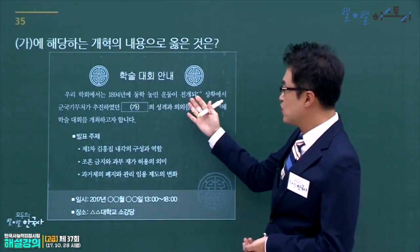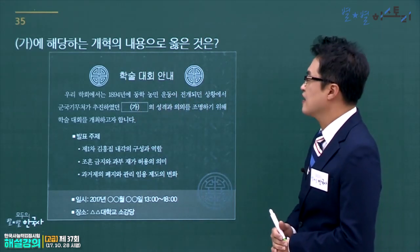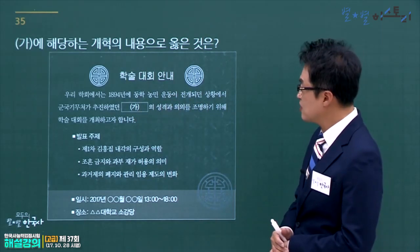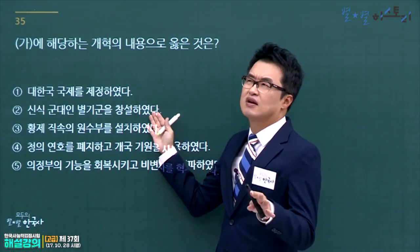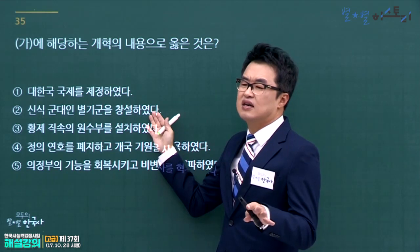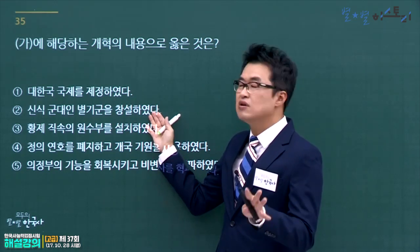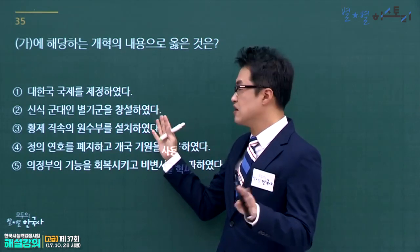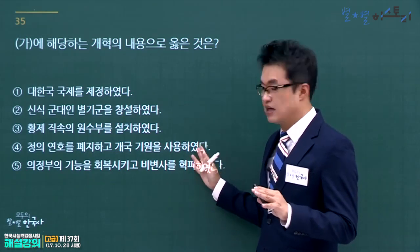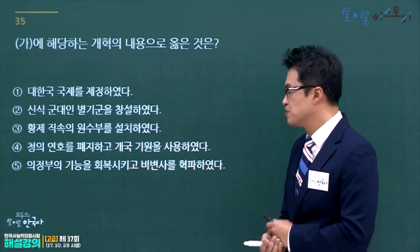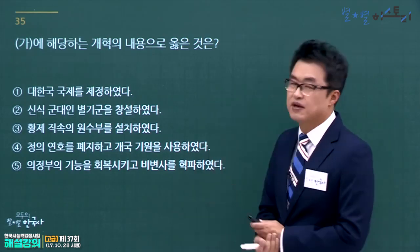동학농민운동 전개 과정에서 군국기무처가 추진한 것은 갑오개혁입니다. 갑오개혁 내용으로 옳은 것을 고릅니다. 대한국 국제 제정은 대한제국, 신식군대 별기군 설치는 통리기무아문(개항 직후), 황제 직속 원수부는 대한제국, 의정부 기능 회복·비변사 폐지는 흥선대원군의 개혁입니다. 청의 연호를 폐지하고 개국기원을 사용한 것이 갑오개혁 내용이므로 정답은 4번입니다.